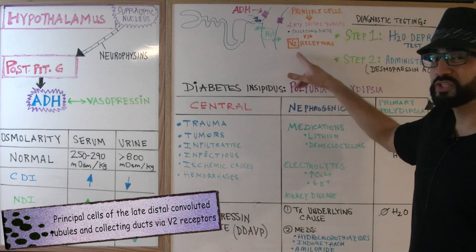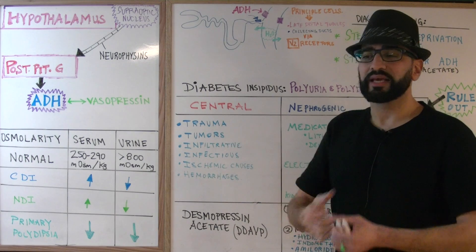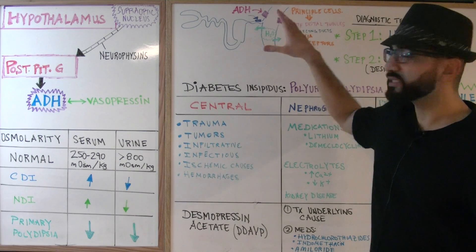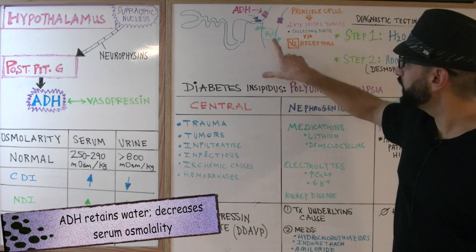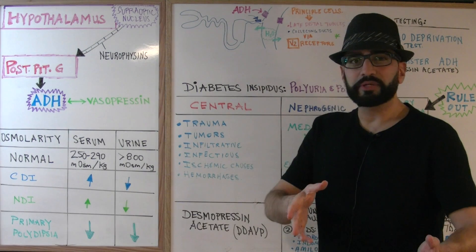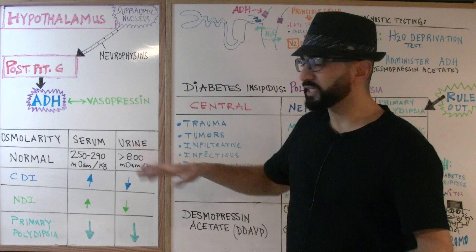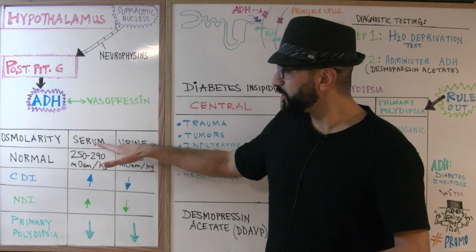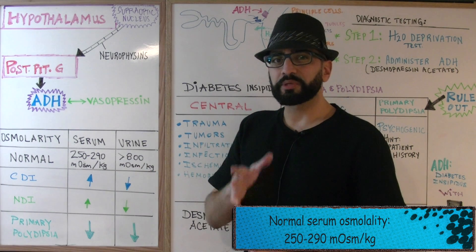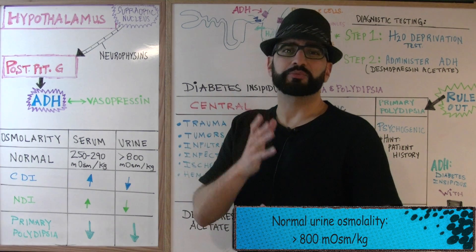ADH works via V2 receptors. The function of antidiuretic hormone is just what it sounds like — antidiuresis. You don't want to urinate all these fluids out. So ADH works on this specific portion of the nephron to retain water back into the serum. For board questions, remember the normal serum osmolality levels range from 250 to about 290 milliosmoles per kilogram, and urine osmolality levels range from anywhere over 800 milliosmoles per kilogram.